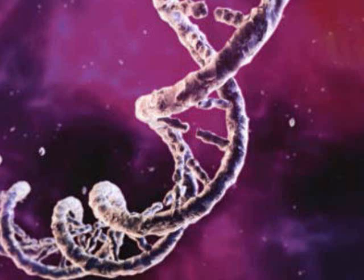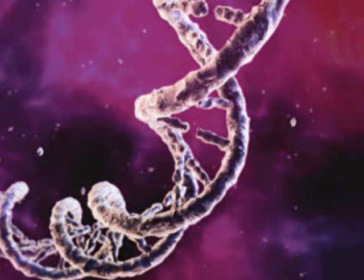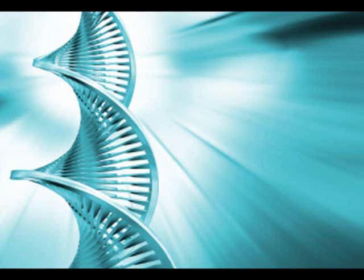Crick was 50 when, in the crowning triumph of his career, he put together the version of the genetic code that we all now know in 1966. Darwin was 50 in 1859 when he published The Origin of Species. So maybe 50 is the time when biologists peak.